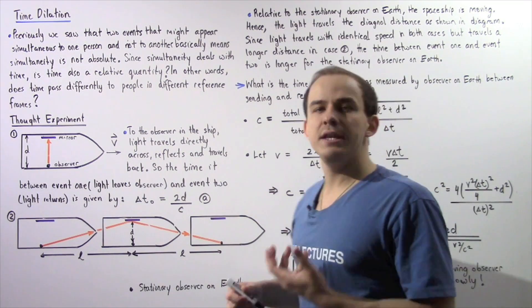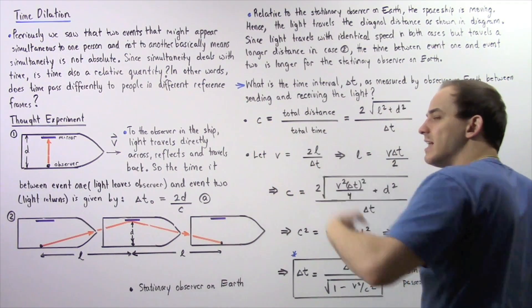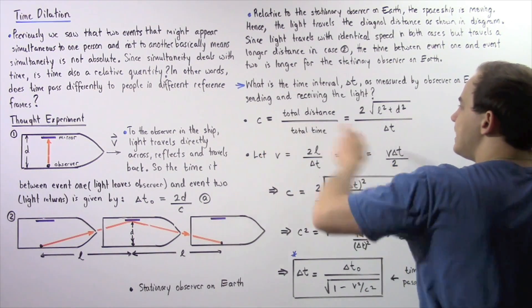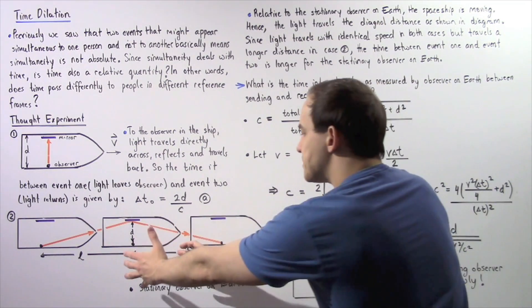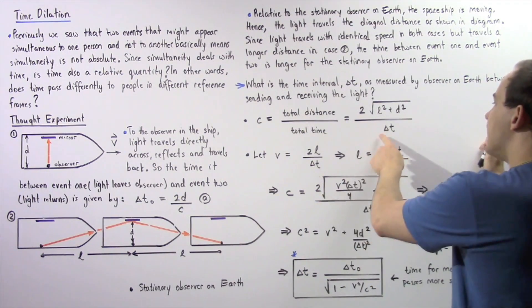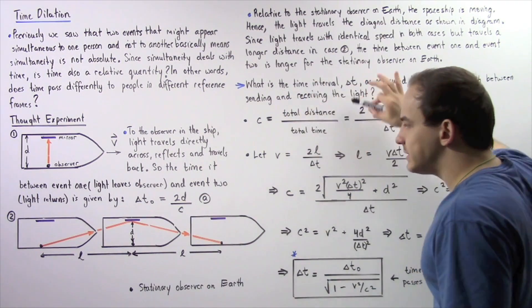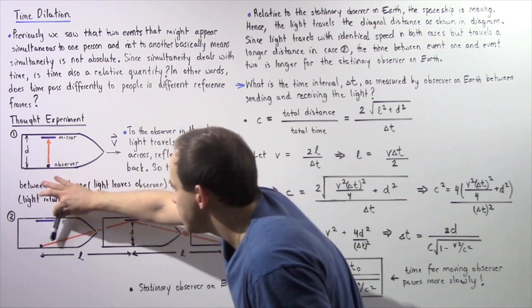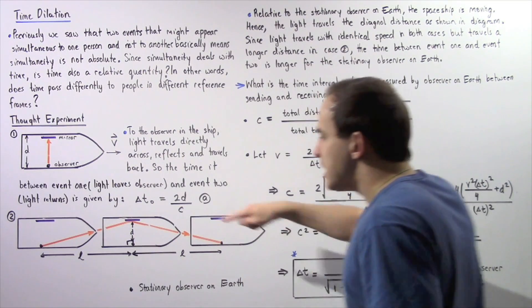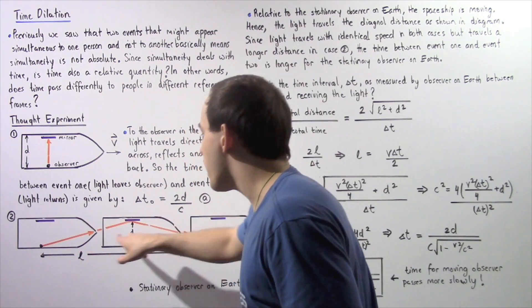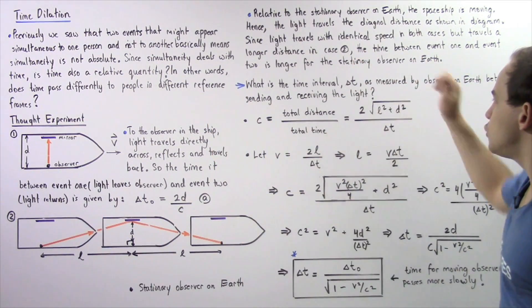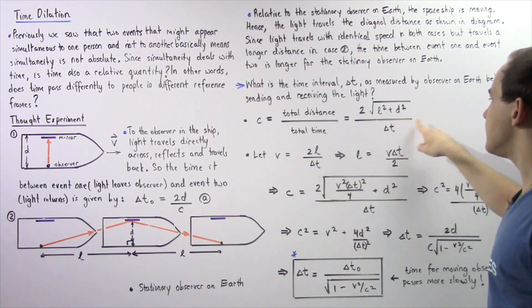Let's begin by using the speed of light. We know the speed of light is always equal to C within a vacuum, according to Einstein's special theory of relativity. So C equals the total distance that light traveled in this case divided by the total time for case number two, delta T. The total distance is two times the hypotenuse of the right triangle formed, which by the Pythagorean theorem equals the square root of L squared plus D squared. So C equals 2 times the square root of L squared plus D squared, divided by delta T.